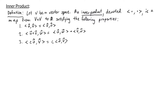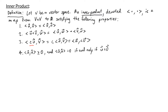Now if c is multiplied to an inner product of two vectors, I can bring that c within the inner product and bring it inside the first term, or I can bring it into the second term — the inner product of u and c times v. Our last property is that the inner product of u with itself is always greater than or equal to zero, and equals zero if and only if u is the zero vector.